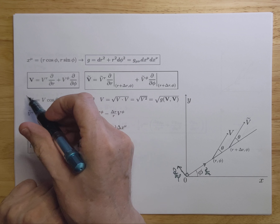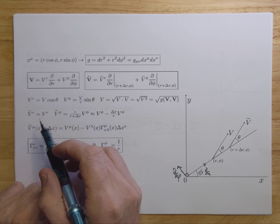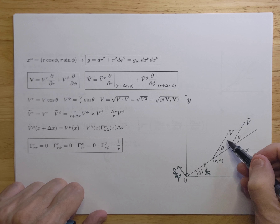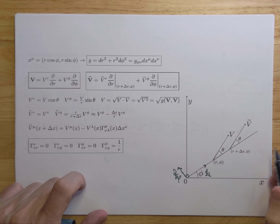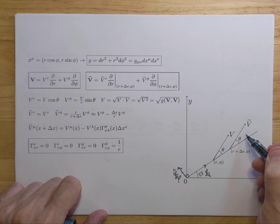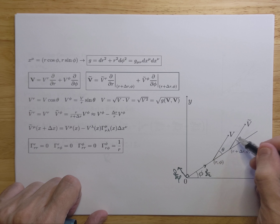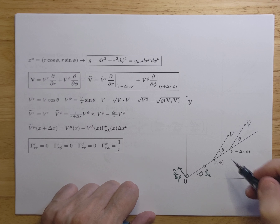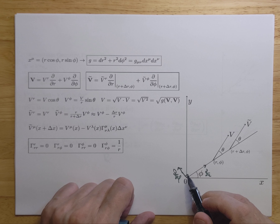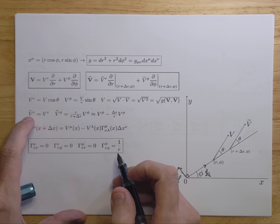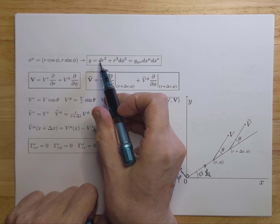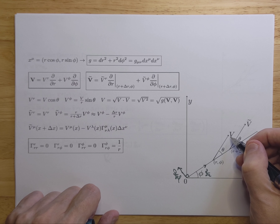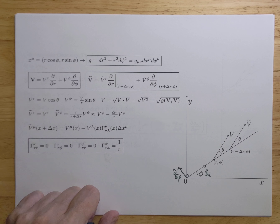Now let's look at Ṽ^R after parallel transporting. You can see that the transported vector is exactly parallel to the original, because it's flat spacetime — you transport it conventionally. For Ṽ^R, since G_RR has a 1, if you move in the R direction the projection will not change. So V^R will be exactly the same as before.